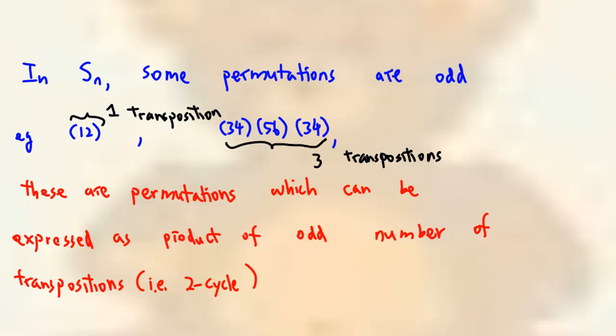Similarly, in S sub n, some permutations are odd. For example, the 2-cycle (1 2) and (3 4)(5 6)(3 4) are odd permutations. These are permutations which can be expressed as product of odd number of transposition.